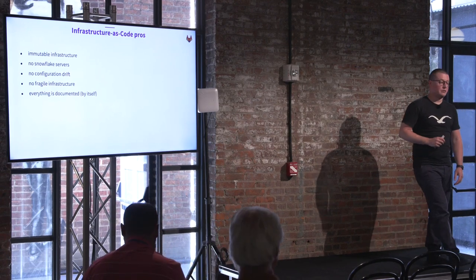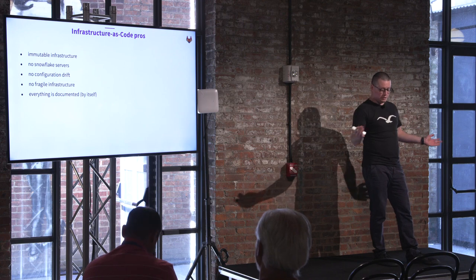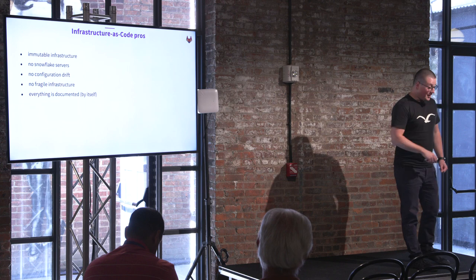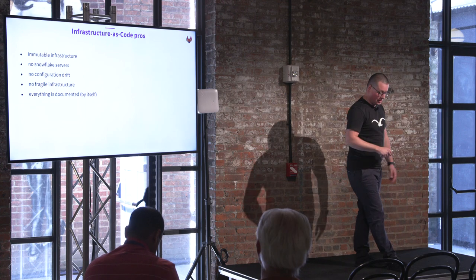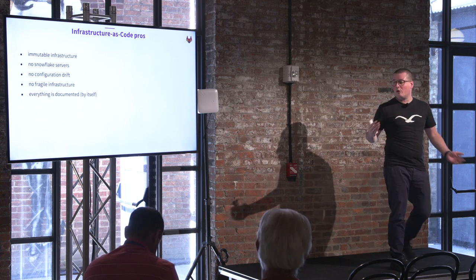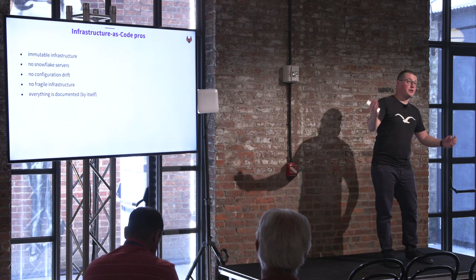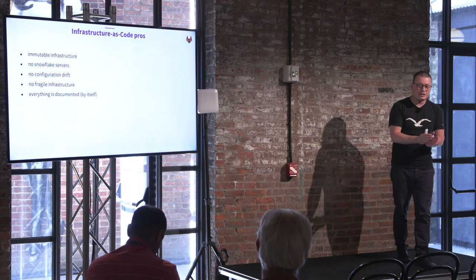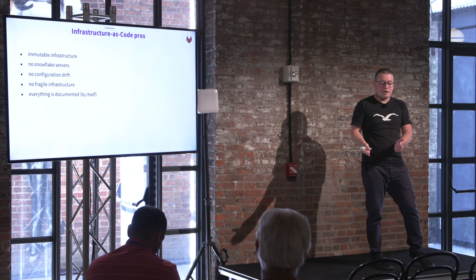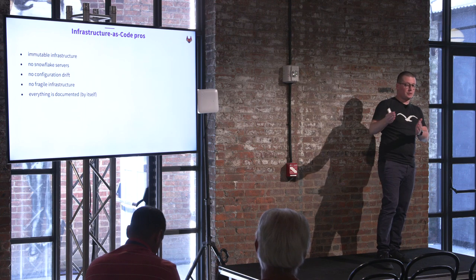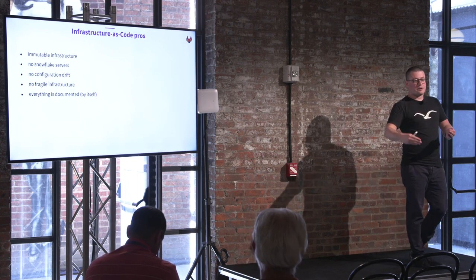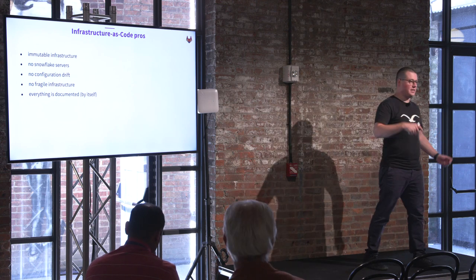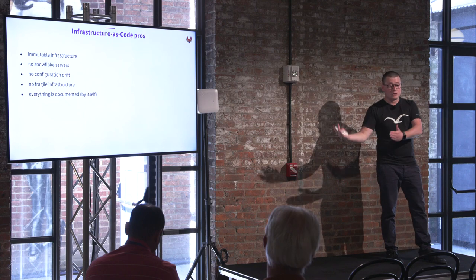Fragile infrastructure basically means your whole infrastructure is based on Snowflake servers. Also, everything is documented by itself, which doesn't mean you shouldn't write comments, readme files, or documentation — but at least your configuration is stored within your code. If you can read your code, you at least know the configuration you're running. Comments and readme files should help everyone else understand the configuration.